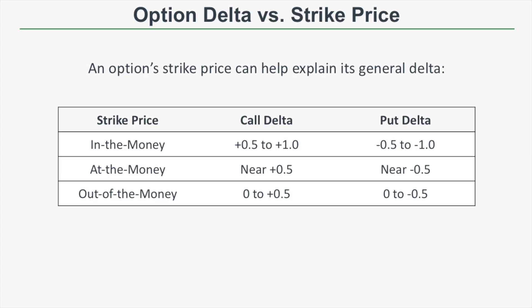Let's talk about the relationship between an option's strike price and its Delta. An in-the-money call will have a Delta between 0.5 and plus 1, and an in-the-money put will have a Delta between negative 0.5 and negative 1. At-the-money options are simpler: an at-the-money call will have a Delta near plus 0.5, and an at-the-money put will have a Delta near negative 0.5.